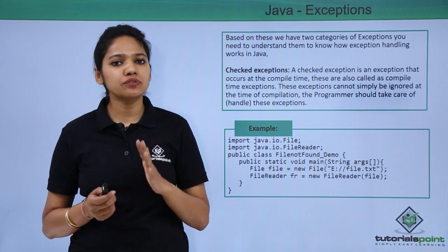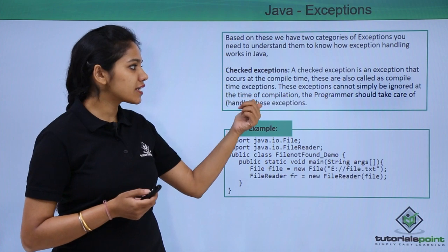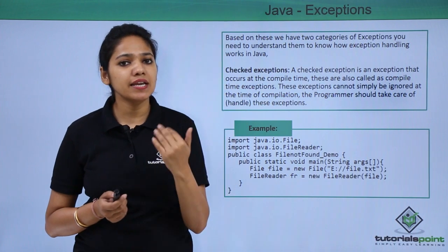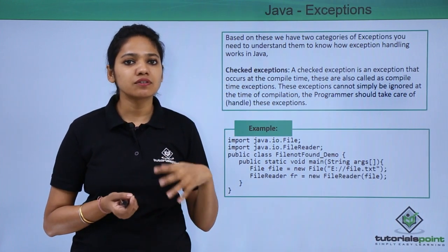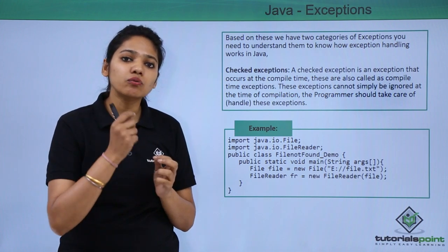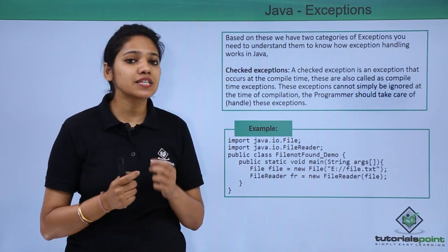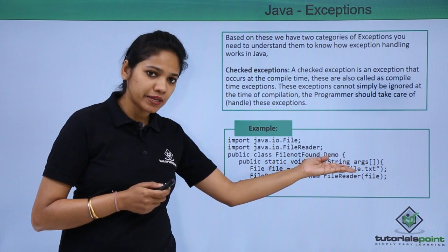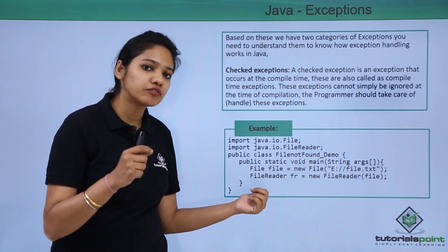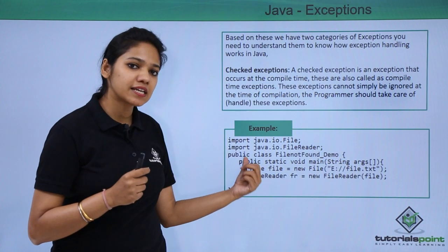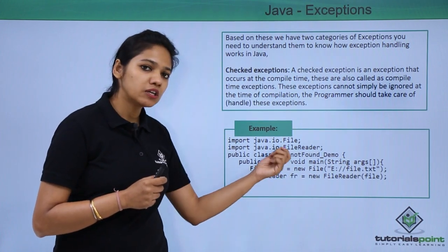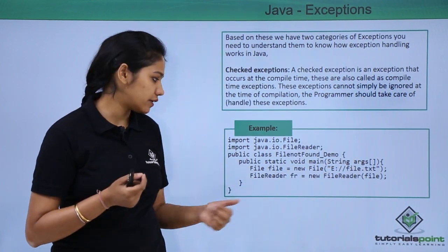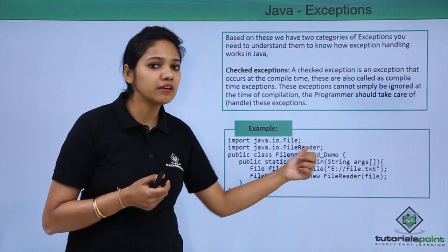There are two types of exceptions: checked and unchecked. Checked exceptions are those which arise at compile time — also called compile-time exceptions. Examples include IOException and SQLException. These exceptions are found within the application and can be rewritten and handled. For example, we create a class with a main method in which we try to create a file object pointing to a file stored in the E drive, and then we try to read that file.